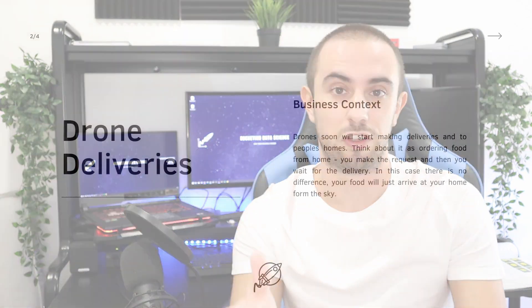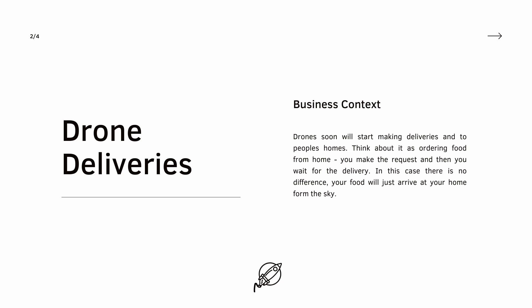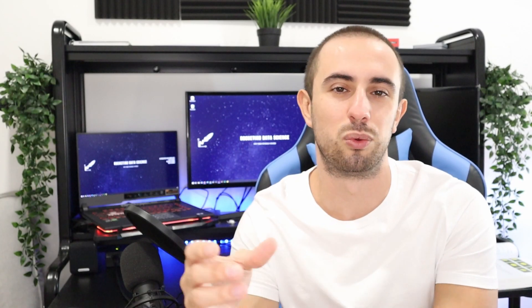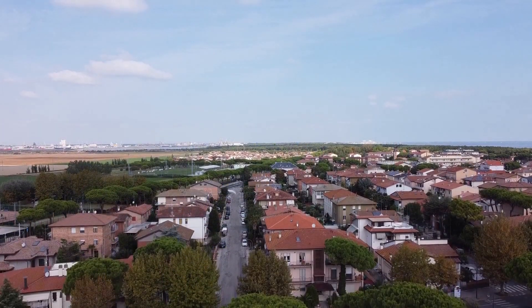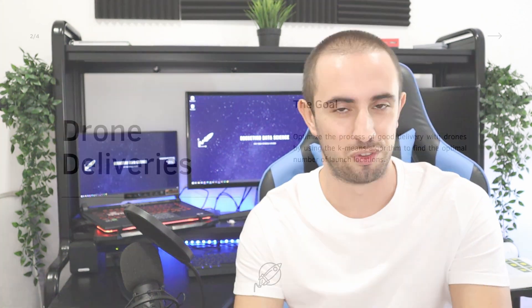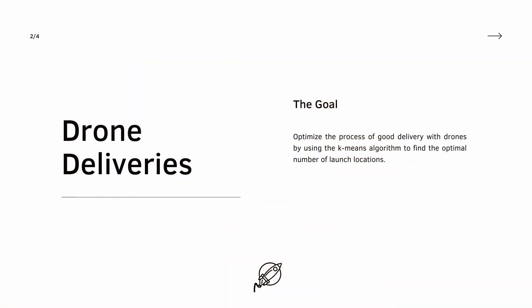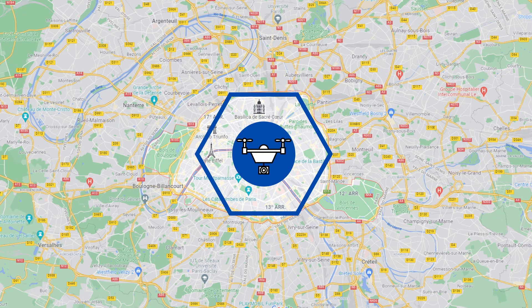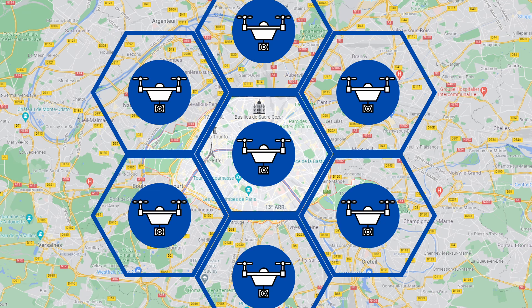The second topic is drone deliveries. Nowadays it is already possible to see drones delivering goods to people's homes, and in the future it will be much more common. Imagine ordering food from home — instead of a person delivering it, drones will. The goal here is to optimize the process by finding the best number of launch platforms so drones can be positioned in the best locations within cities.